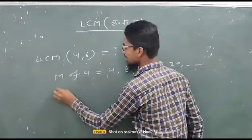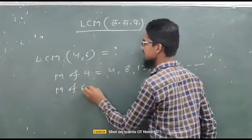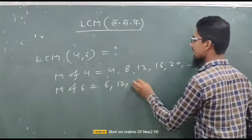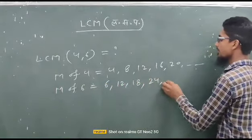Multiple of 6 is 6, 12, 18, 24 and so on.